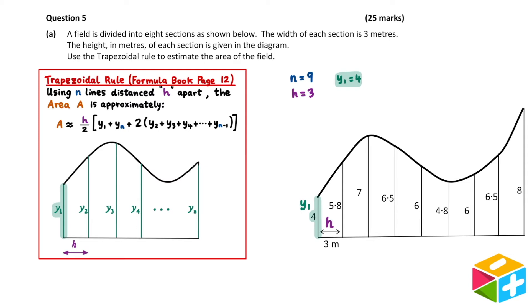y1 refers to the height of the first vertical line. In our picture y1 is equal to 4. y2 is the height of the second vertical line. In our picture y2 is 5.8. y3 is the height of the third vertical line, and we have y3 is equal to 7.